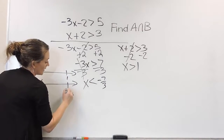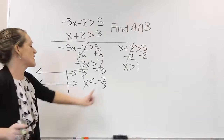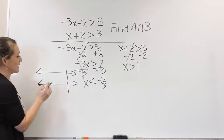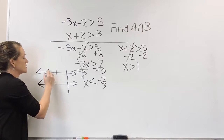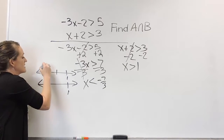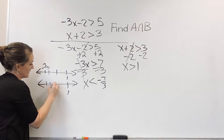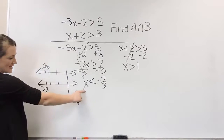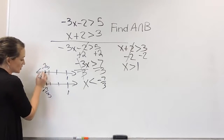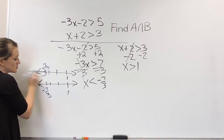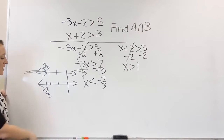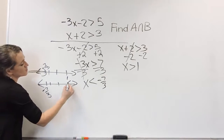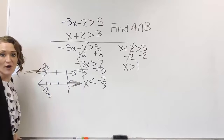We're concerned with 1 on both of them and then negative 7 thirds, which is about negative 3.333. So let's mark negative 7 thirds on the number line. For our first graph, x is less than negative 7 thirds — that means a parenthesis and shading to the left. For the second, x is greater than 1 — a parenthesis on 1 and shading to the right.